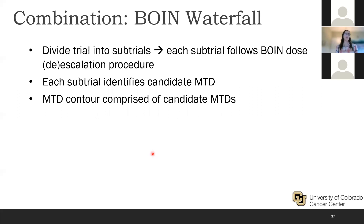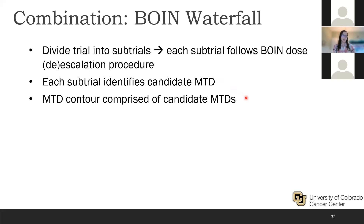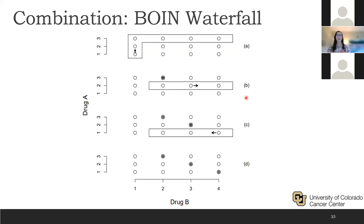This can be accomplished using the BOIN waterfall design, which divides the overall optimization problem into subtrials. Each subtrial follows the same dose escalation and de-escalation procedure covered in the single-agent part of this lecture. Each subtrial finds a candidate MTD, and after completing all subtrials, we obtain an MTD contour comprised of all candidate MTDs. We have different drug A and drug B doses broken into subtrials to find the contour.